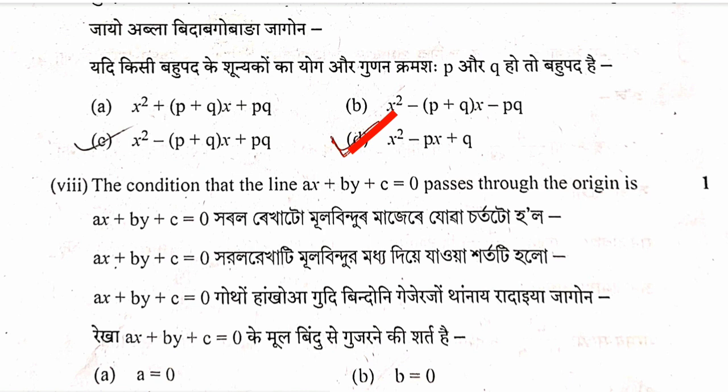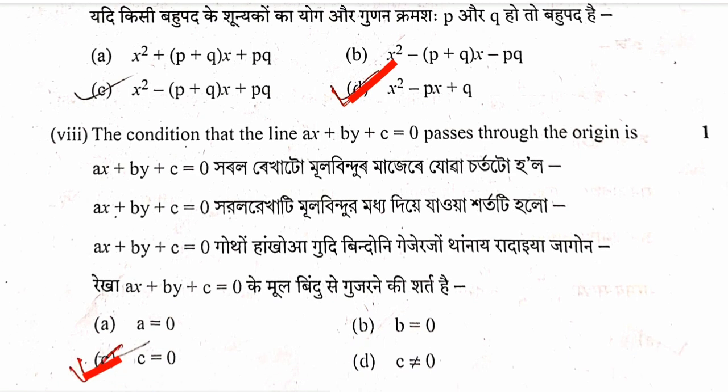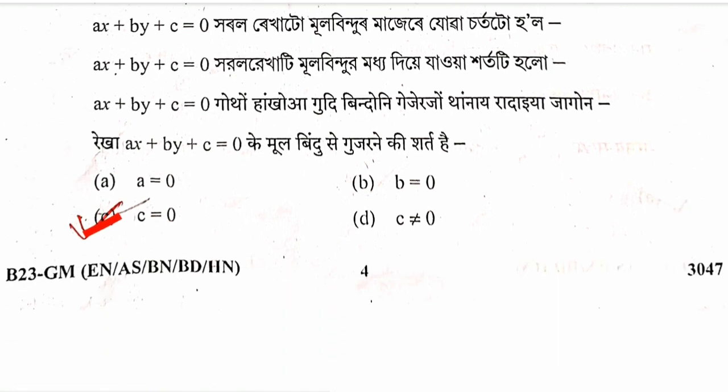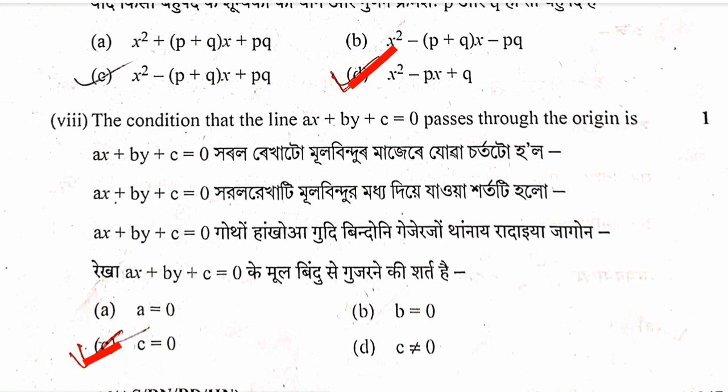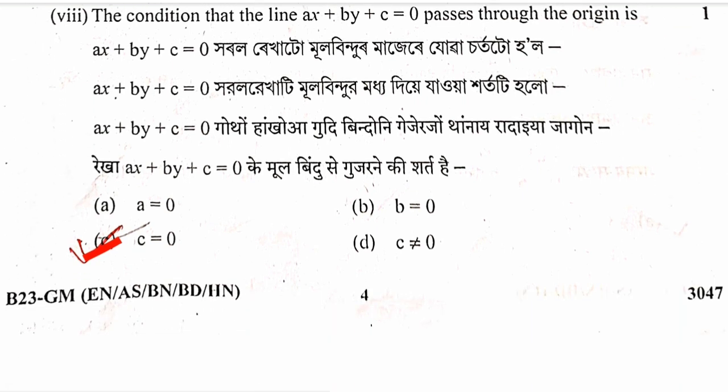Eighth question: The condition that the line ax plus by plus c equals zero passes through the origin. Since the line passes through the origin, the coordinates x and y are both zero, therefore c equals zero. Option C is correct.